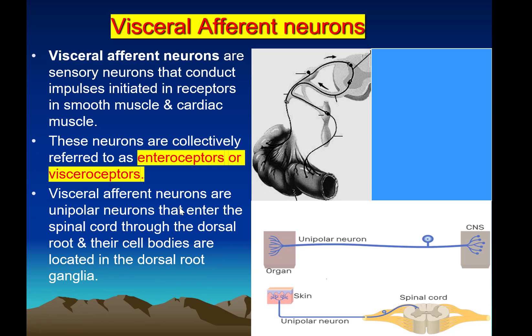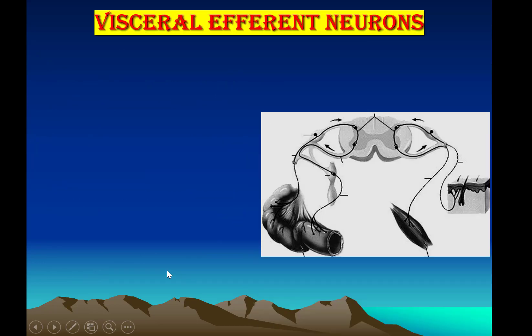Visceral afferent neurons are unipolar, like the somatic neurons. They enter the spinal cord through the dorsal root, and their cell bodies are located in the dorsal root ganglia. They enter the dorsal horn of the spinal cord.